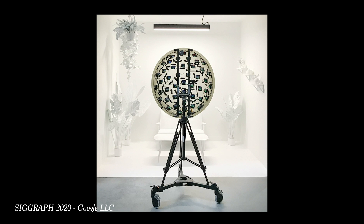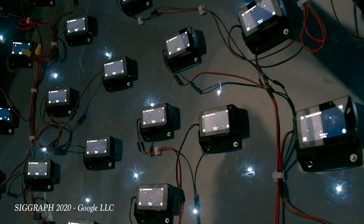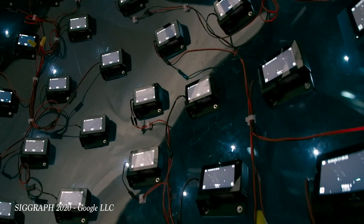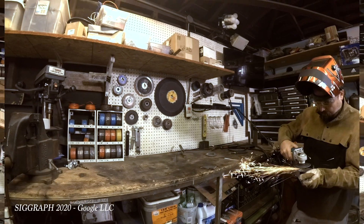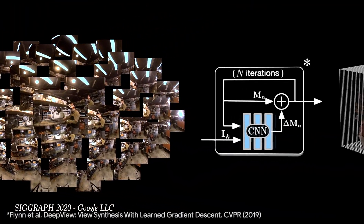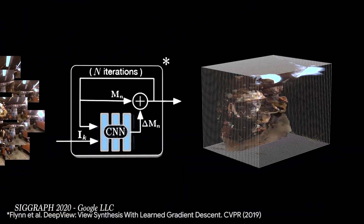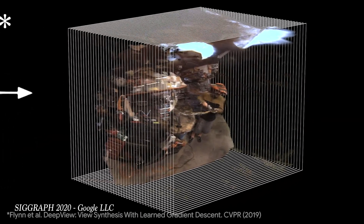This paper was released by SIGGRAPH 2020, and they go on to explain how their process works. They used 46 time-synchronized cameras to capture a bunch of different angles of the same exact scene. By using artificial intelligence and machine learning, they process through this video data to create this augmented perception. The examples shown have 220 degrees of freedom, perceived movement within a scene, and it works at up to 30 frames a second currently.